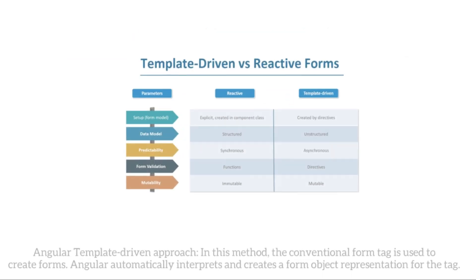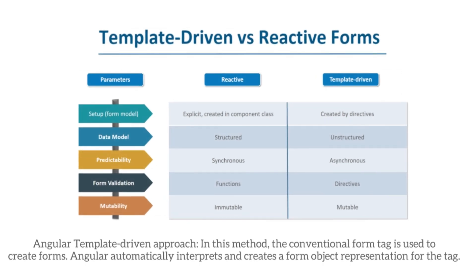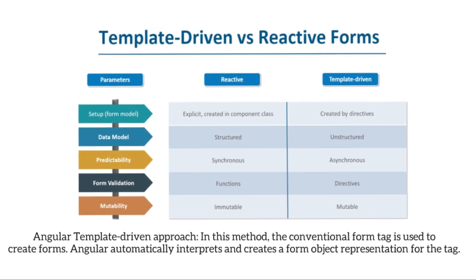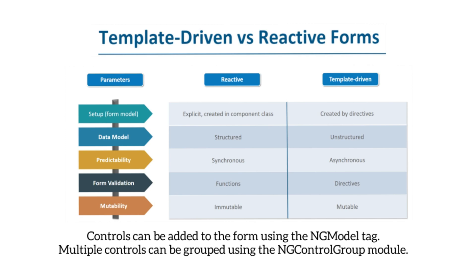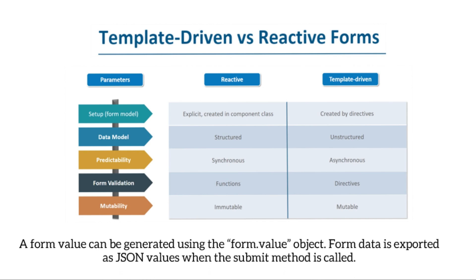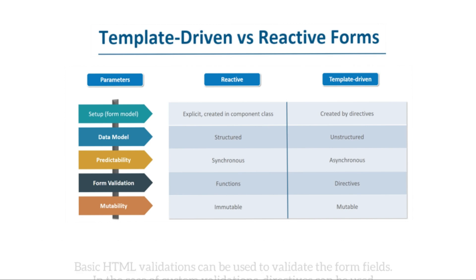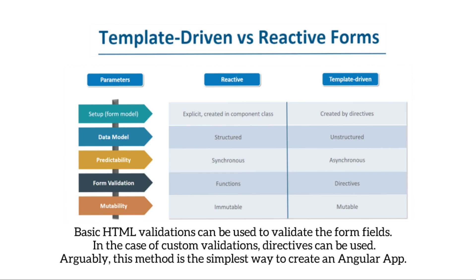In the Angular template-driven approach, the conventional form tag is used to create forms, and Angular automatically creates a form object representation for the tag. Controls can be added using the ngModel tag, and multiple controls can be grouped using the ngControlGroup module. Form data is exported as JSON values when the submit method is called, and basic HTML validations or custom directive-based validations can be used. This is arguably the simplest way to create an Angular app.